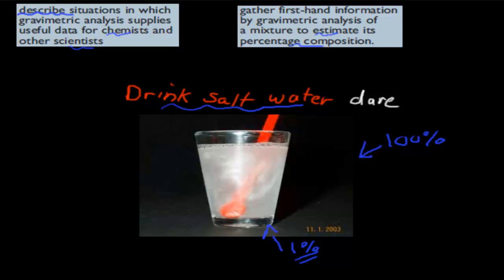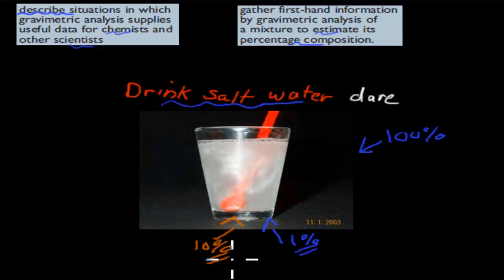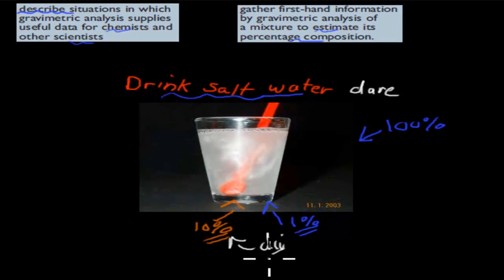But if that concentration were higher, so for example, if of that water, let's say maybe 10% were actual salt, and if you were to actually manage to drink that, you might actually die. So that would obviously be pretty bad, and you don't want to die. So you would want to find out how much of that actual solution is salt before you take that dare, to make sure you don't die when you do it.